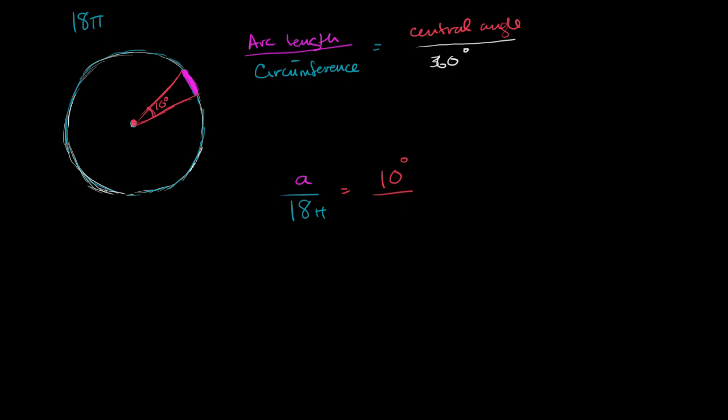So we could simplify this by multiplying both sides by 18π. And we get that our arc length is equal to, well, 10 over 360 is the same thing as 1 over 36. So it's equal to 1 over 36 times 18π.